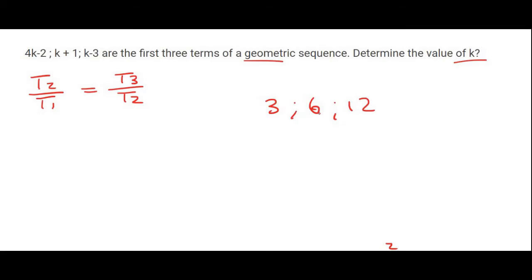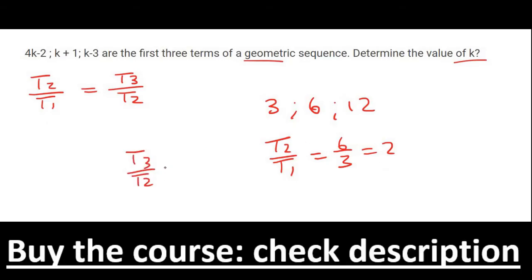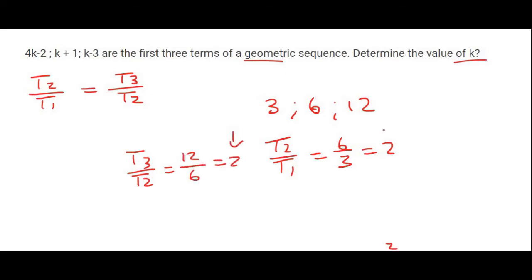So would you agree with me that if I take term 2 divided by term 1, well that's going to give me 6 over 3 which is 2. Is that not the same as saying term 3 divided by term 2? Well yes it is because that's 12 over 6 and that is 2. So we get the same answer.